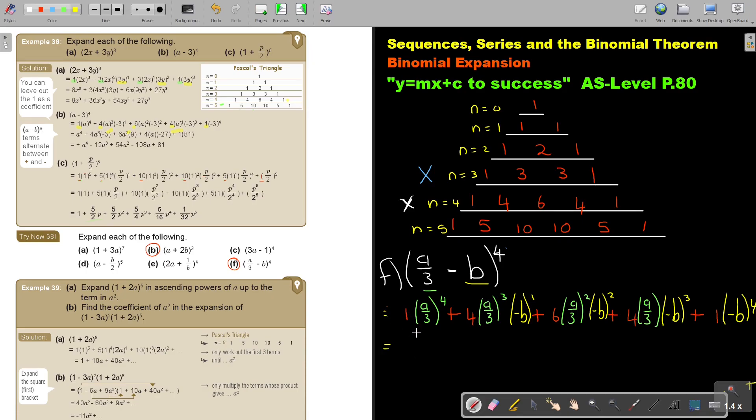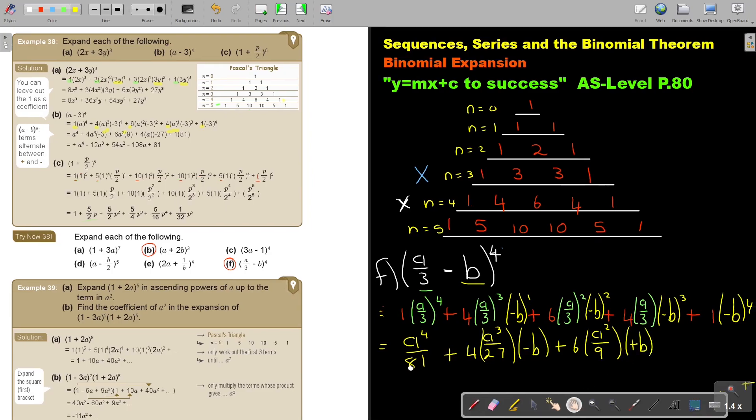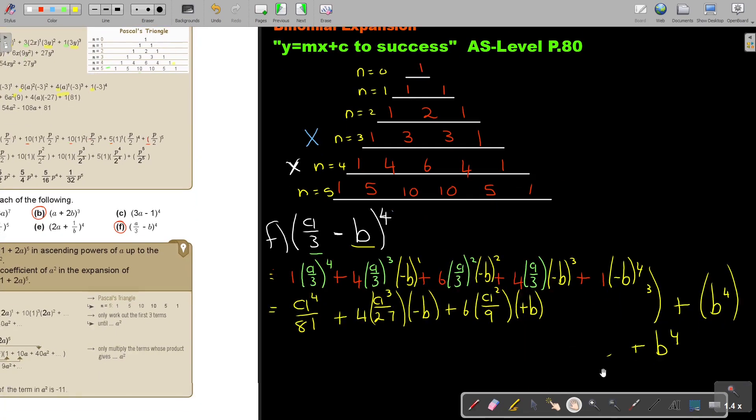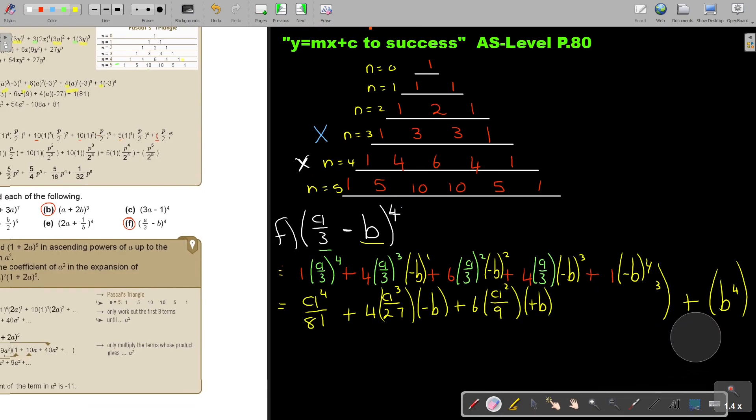And then I simplify it further. Now this is going to be just, so it's A to the power of 4, 3 to the power of 4 will be 81. Plus, I'm just simplifying first. A cubed, 3 to the power of 3 is 27, and the negative B. Plus 6. And this will be A squared. And this will be 3 times 3, it's 9. And that's, because it's even number, it will become positive B squared. Let's just go on. So where am I? So this was 6, this is A squared 9, this is B squared.